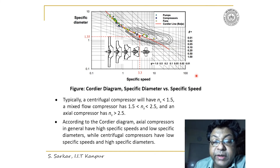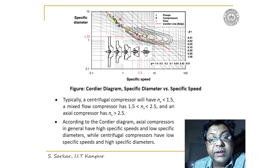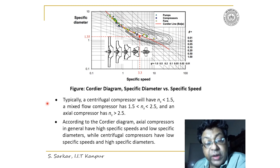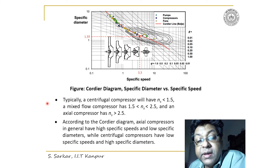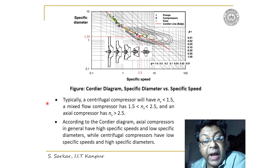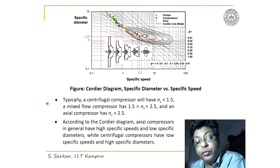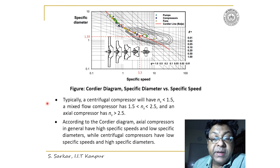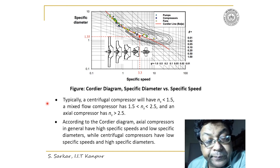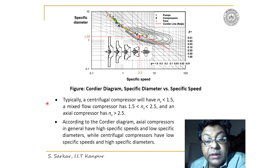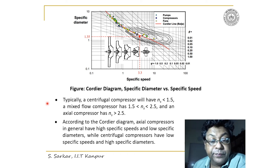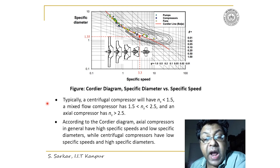In any design activity, one initiates the design with the Cordier diagram. A centrifugal machine typically has Ns ≤ 1.5; a mixed flow machine has Ns between 1.5 and 2.5; axial flow machines have Ns greater than 2.5. According to the Cordier diagram, axial flow machines generally have high specific speed and low specific diameter.